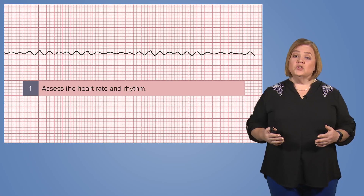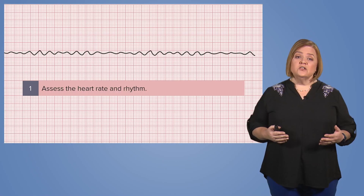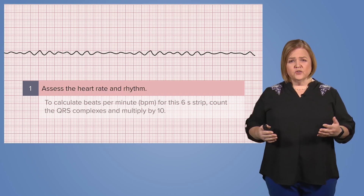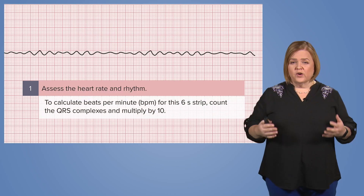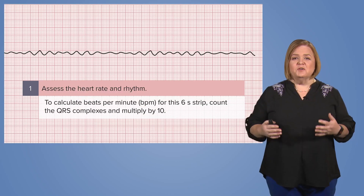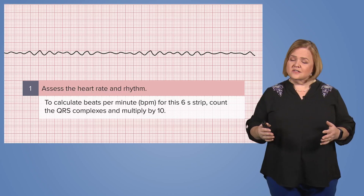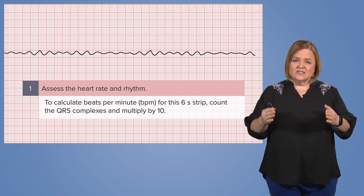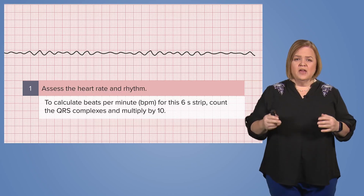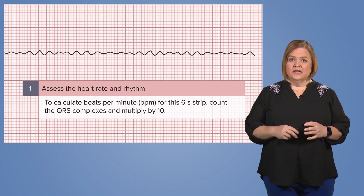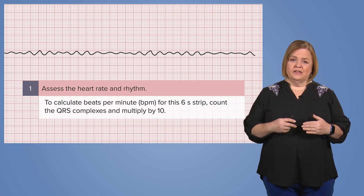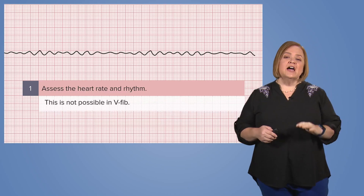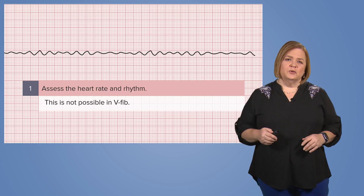Step one, we're looking at the heart rate and rhythm. In order to determine what rate this is, we would count the QRS complexes on a six-second strip and multiply it by 10. That's not happening here — this is not possible in V-fib.